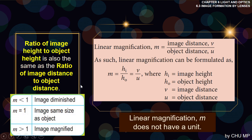If M is less than 1 (e.g., 0.5), the image is diminished — smaller than the object. For example, object height 2cm, image height 1cm: M = 1/2 = 0.5, which is less than 1, so the image is diminished. If M equals 1, image height equals object height — same size as object. If M is greater than 1 (e.g., image height 4cm, object height 2cm: M = 4/2 = 2), then 2 is greater than 1, meaning the image is magnified.